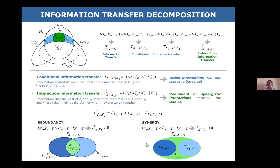If we focus on information transfer and try to decompose it when we have two or more drivers, starting with two drivers: the total information transfer can be decomposed into information transfer from driver one, information transfer from driver two, plus an interaction term — extending the notion of interaction information to this conditioning on the past. We see two cases: if the total information transfer is smaller than the sum of the two individual transfers, the interaction information transfer is greater than zero — we call this redundancy. If the total is greater, the interaction term is negative — we call this synergy.